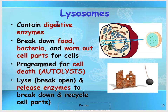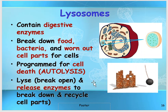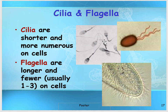The next organelle is the lysosome. Lysosomes are tiny sacs filled with extremely powerful enzymes. Their main function is to eat up, kill, or destroy any worn-out cells or pathogens that attack our cells. They act as a trash compactor, cleaning up the cell. Sometimes, when a cell is about to die, it releases these enzymes to kill itself — this process is called autolysis.